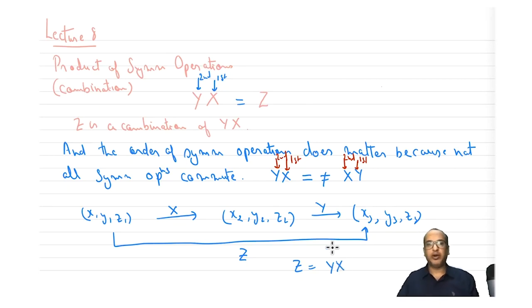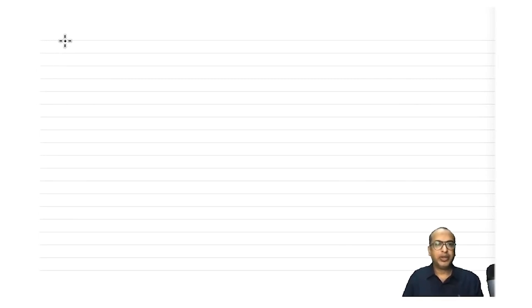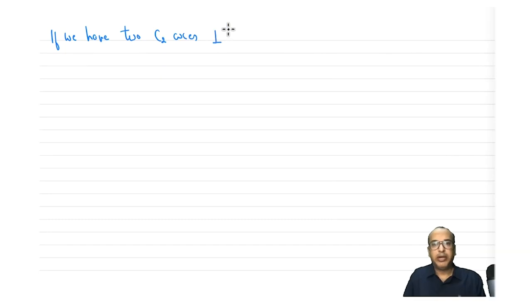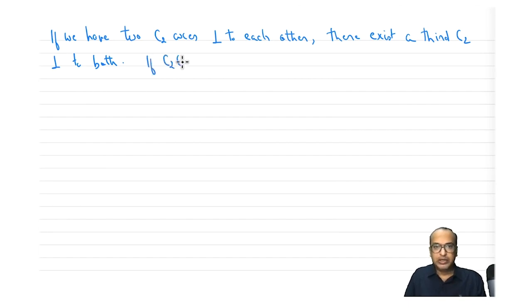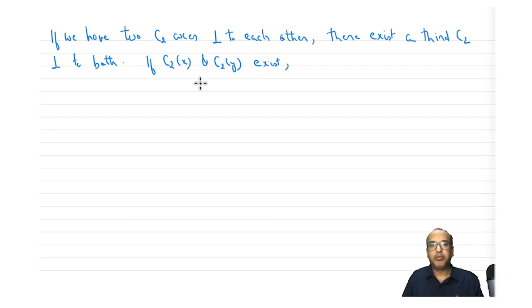For example, if we have two C2 axes perpendicular to each other, there must exist a third C2 axis perpendicular to both. So if C2x and C2y exist, because they are perpendicular to each other, C2z must also exist.